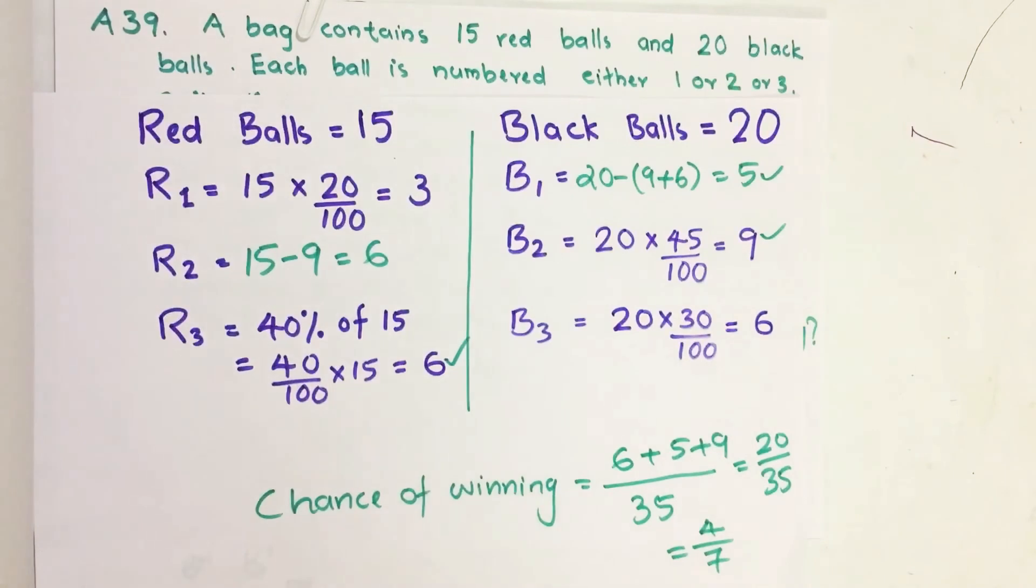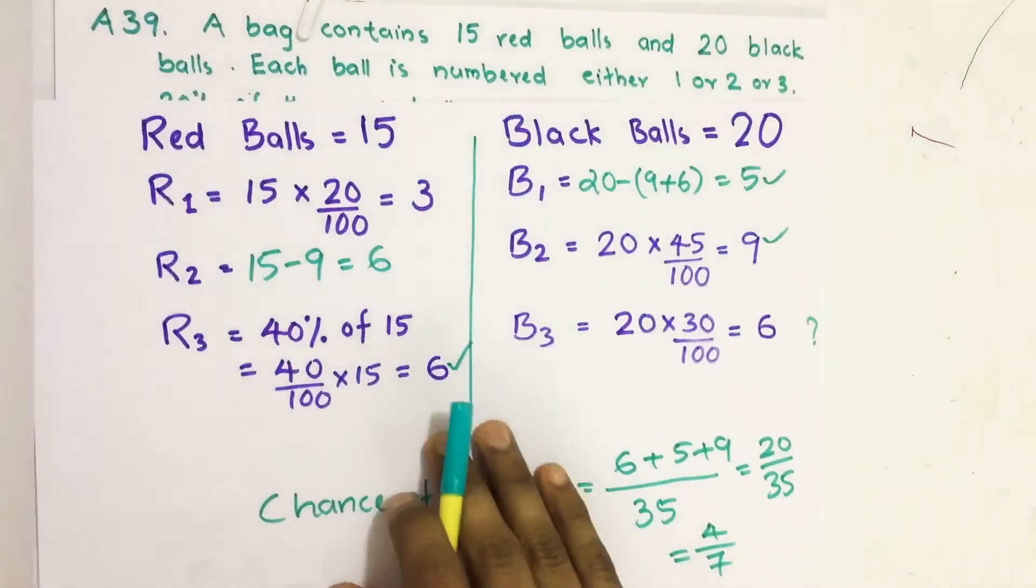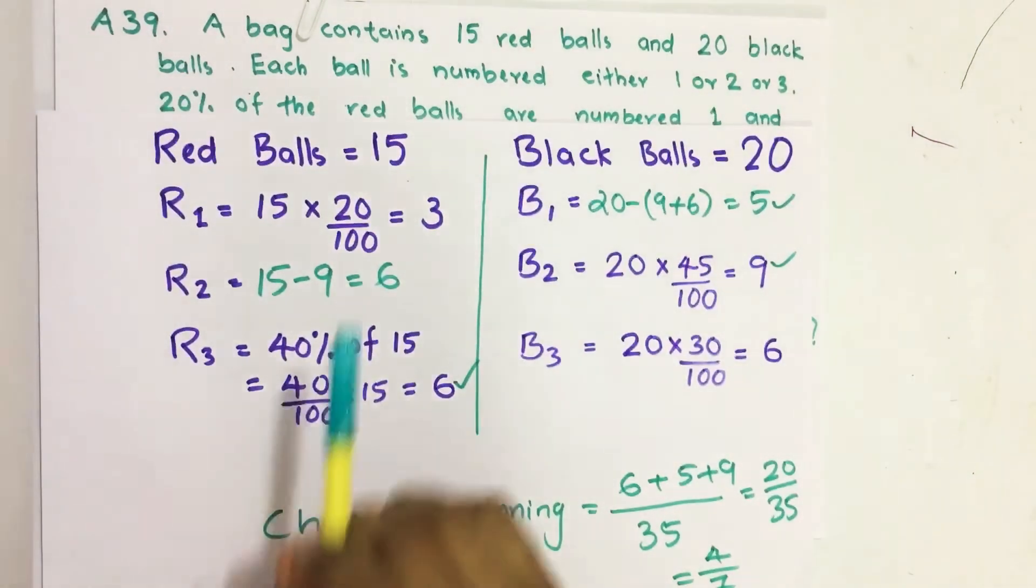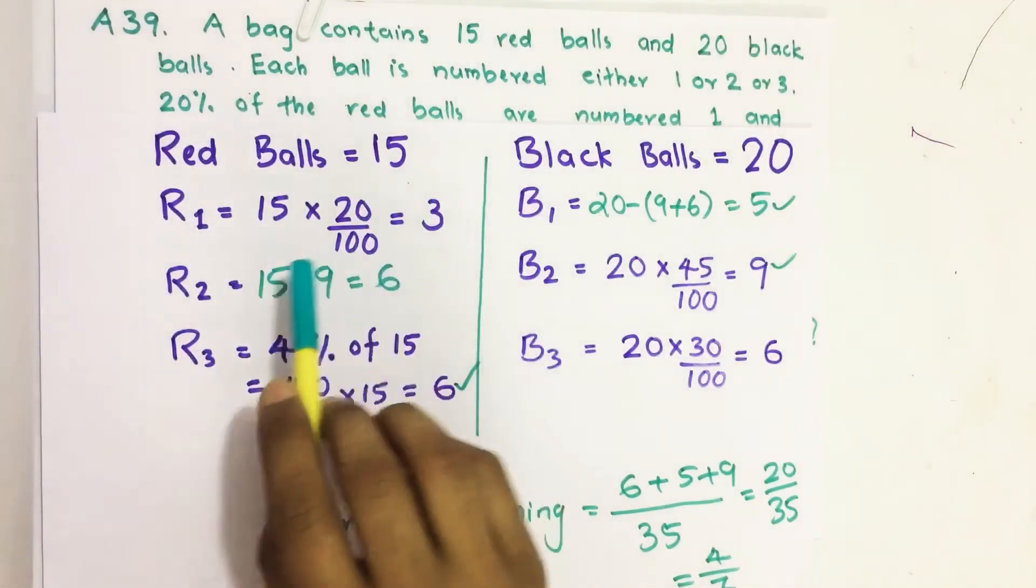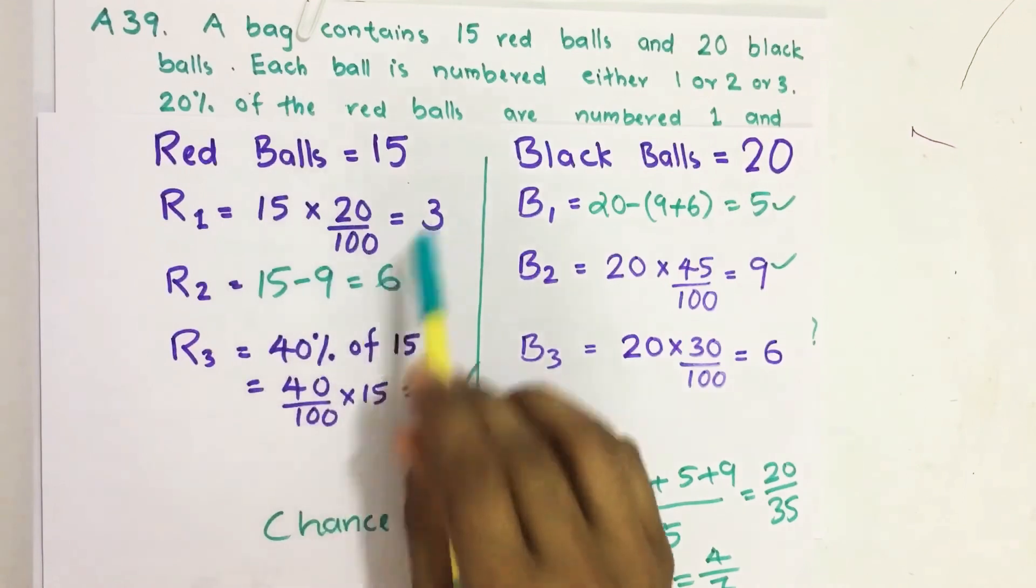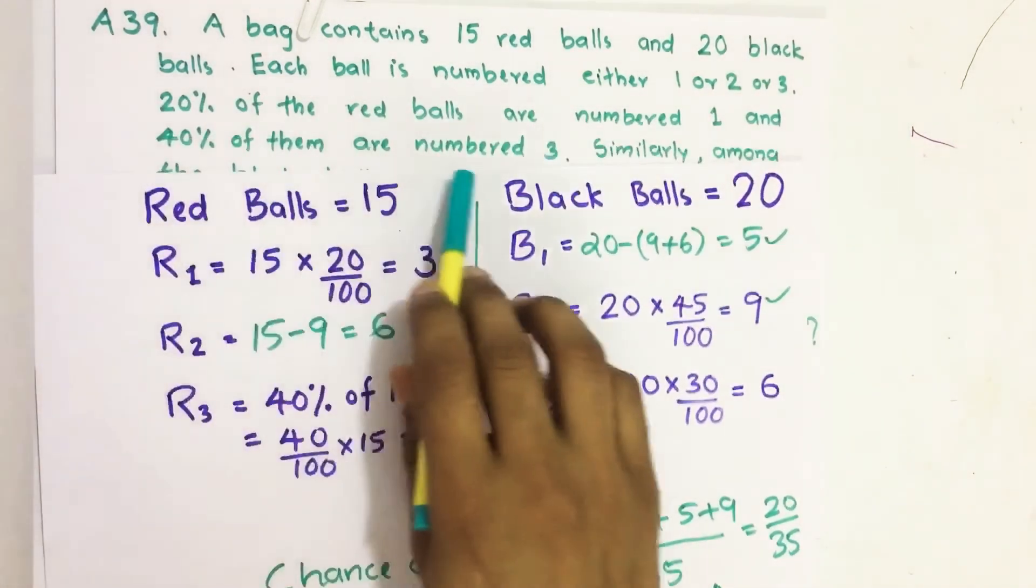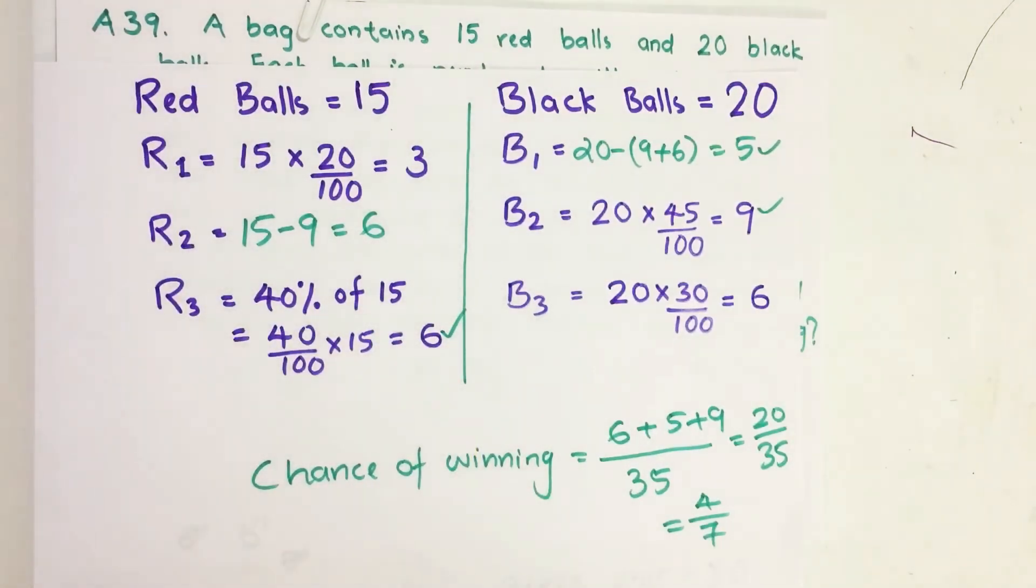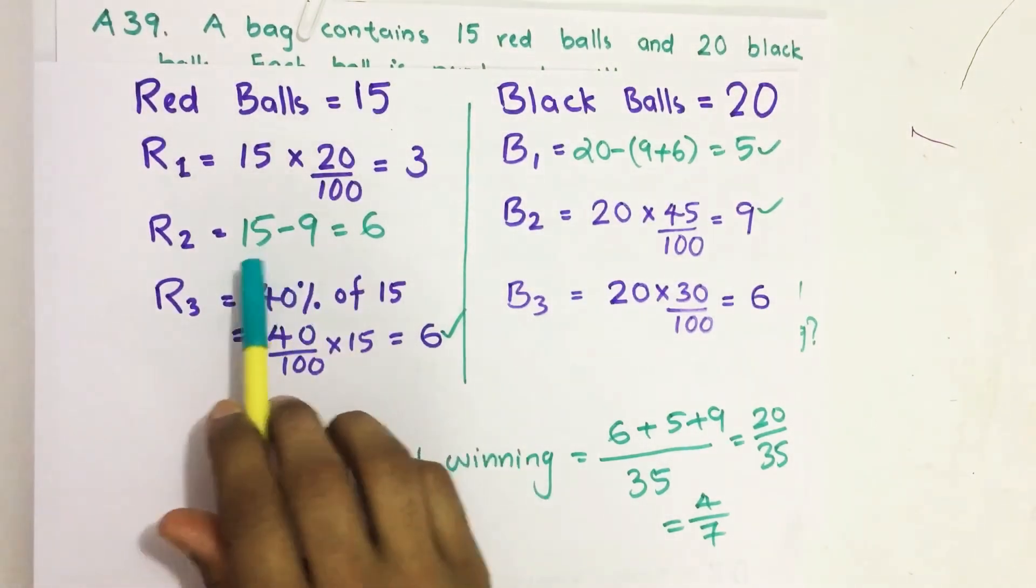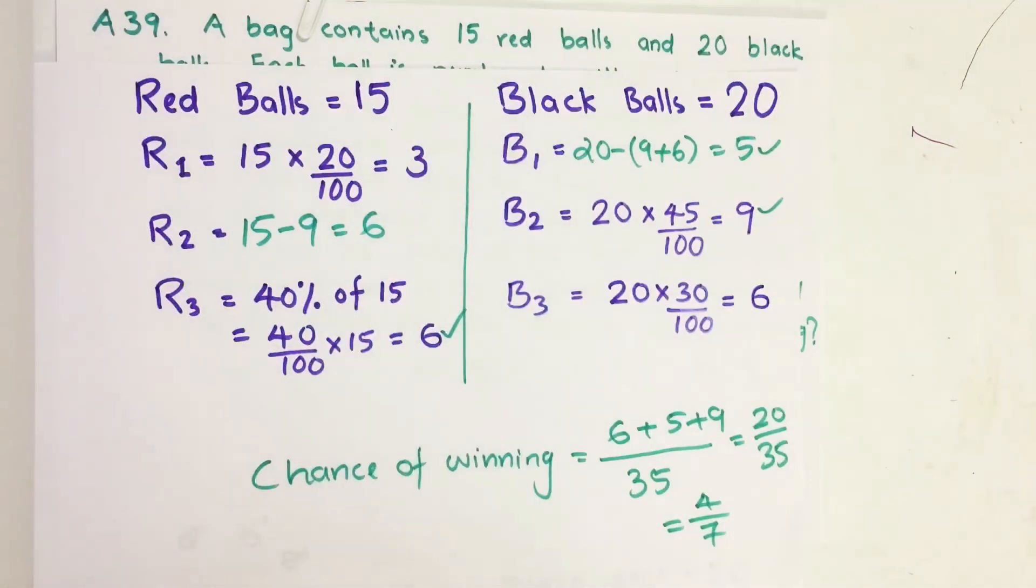Here in the bag we have 15 red balls and 20 black balls. Out of these 15 red balls, 20% are numbered 1, which is equal to 15 times 20 by 100, equals 3. Similarly, 40% of them are numbered 3, so 40% of 15 equals 6. Therefore, the remaining are numbered 2, which is 15 minus 9, we get 6.